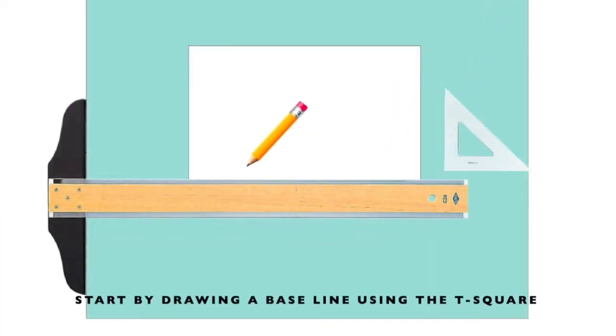We're going to start by using the T-square drawing a horizontal line. We're going to call this a base line.